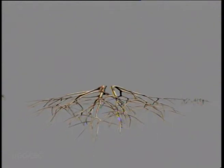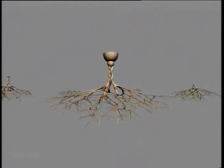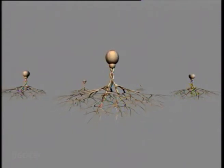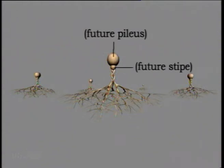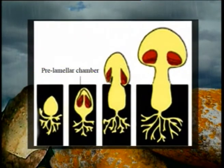Basidiocarps develop at the tips of underground hyphae as small white knot-like structures. These hyphal knots enlarge and grow into rounded or piriform pinhead structures called buttons. At this stage the growing basidiocarp consists of two parts: the bulbous basal part, which develops into the stipe, and a hemispherical apical region, which forms the pileus.